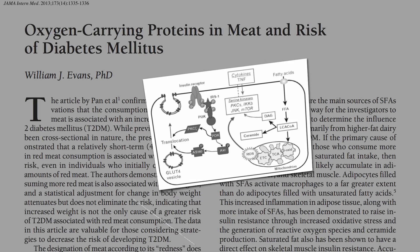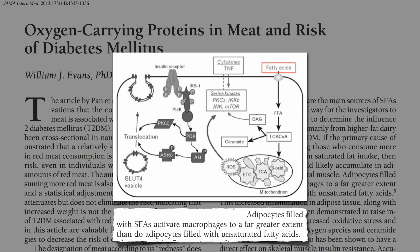Fat cells filled with saturated fat activate an inflammatory response to a far greater extent. This increased inflammation, along with eating more saturated fat, has been demonstrated to cause insulin resistance through free radical and ceramide production. Saturated fat has also been shown to have a direct effect on skeletal muscle insulin resistance. Accumulation of saturated fat increases the amount of diacylglycerol in our muscles, which has a potent effect on muscle insulin resistance.